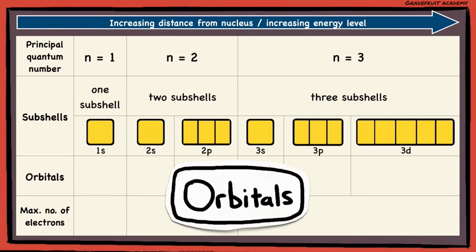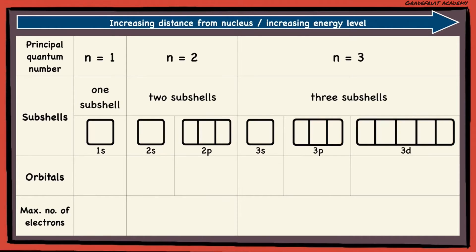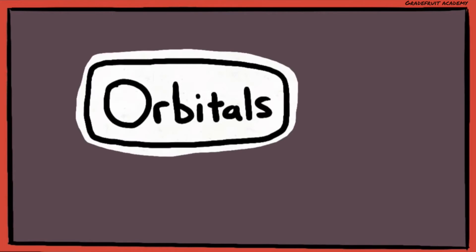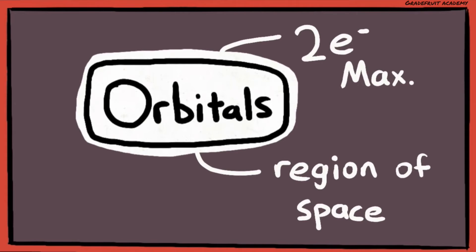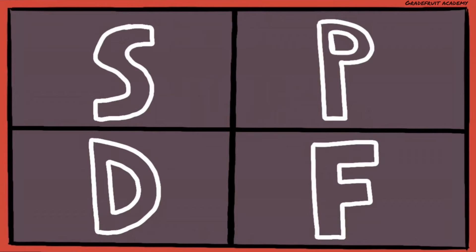Within each of these spaces here lies an orbital. An orbital is basically a region of space that can contain up to a maximum of 2 electrons. There are 4 different types of orbitals, the S, P, D, and F orbitals. But for our syllabus, we will just focus on the S, P, and D orbitals.